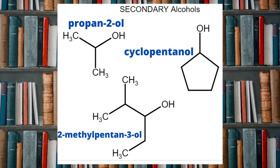Now we know what a primary alcohol is, we can draw the easy comparison to what makes a secondary alcohol. A secondary alcohol is when the carbon which is directly bonded to the oxygen of the OH functional group is itself only bonded to two other carbon atoms directly, and therefore one H atom directly. Propan-2-ol is the simplest example of a secondary alcohol. The carbon bonded to the OH is bonded to a CH₃ in one direction and a CH₃ in the other direction as well.